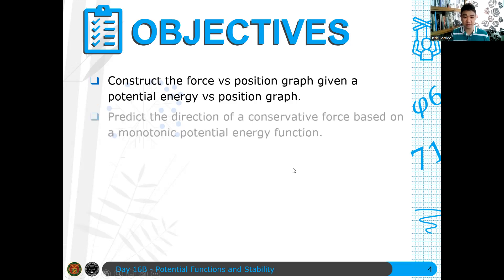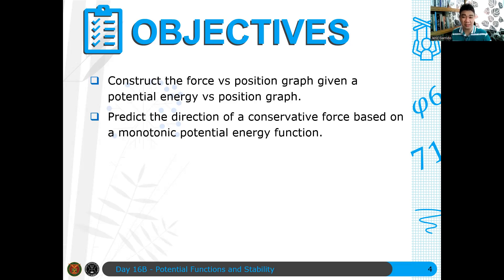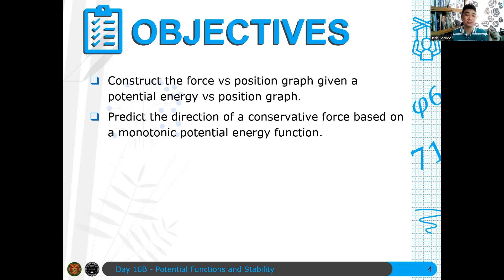The second objective is to predict the direction of a conservative force based on a monotonic potential energy function — essentially, determining which direction the force on a particle will act. This has something to do with the relationship between force and potential energy, always assuming that the force is conservative. Remember, if the force is conservative, you can define a potential energy function for it.